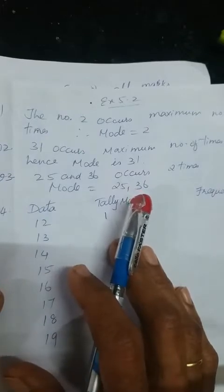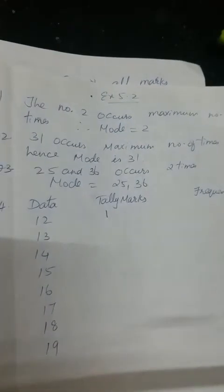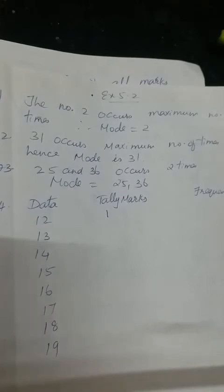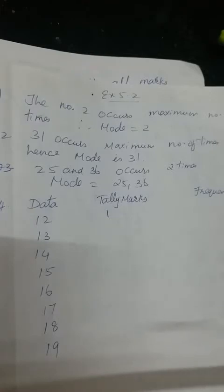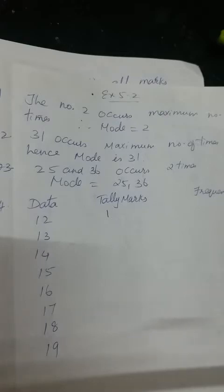The number of points scored by a cricket team in 20 matches are given. Again you have to see which digit is repeating the maximum number of times. Here 36 is coming only 1 time, 35 is coming 2 times. Then you check 27 and all other numbers one by one. When you see the number 31, it occurs maximum number of times. Hence the mode of the given data is 31.